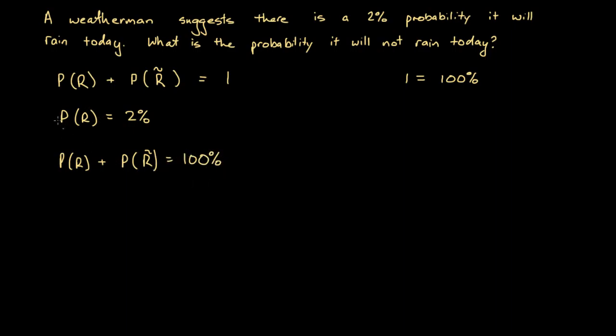And we could note that we know that P(R), the probability of it raining, is 2%. So we can substitute that in here. So we could say 2% plus the probability of it not raining is 100%. And all we have to do is subtract 2% from both sides. So then we get the probability of it not raining is 100% minus 2% equals 98%.